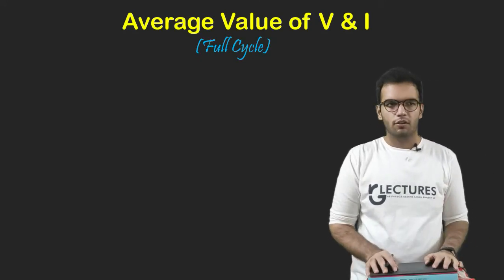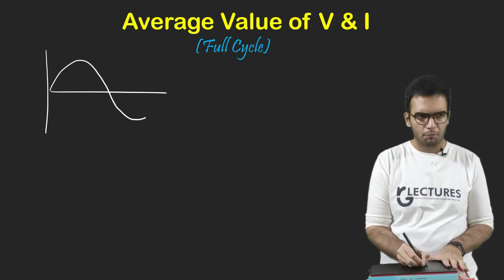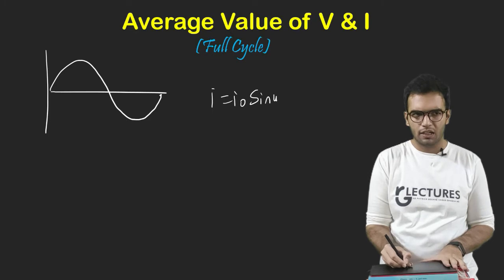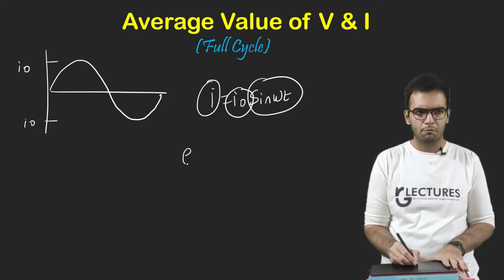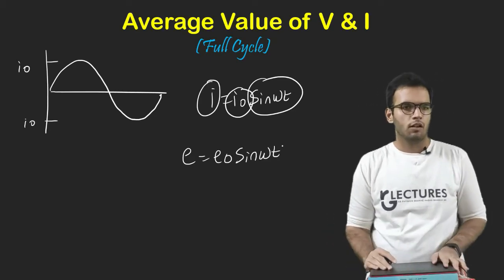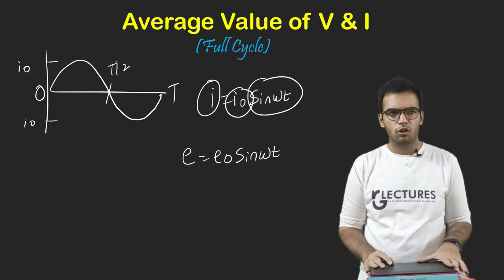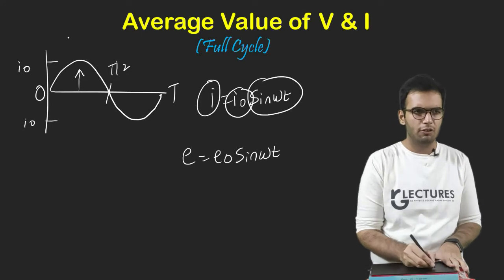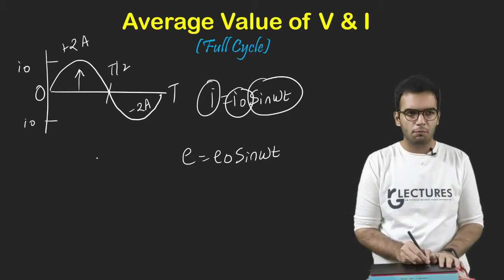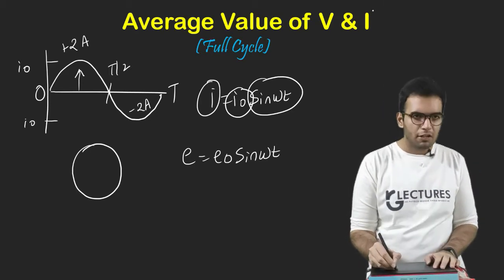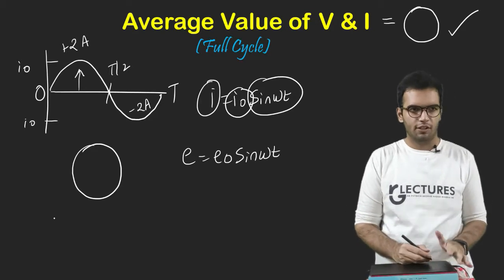Let's talk about the average value of voltage and current over a full cycle. Everything is represented by a sine wave because I = I₀ sin(ωt). So current is represented by a sine wave with amplitude I₀. This is my zero time period, this is my time period T — one cycle. In a half cycle, my current is in the upward direction, say +2 amps; in the next half cycle, it is in the negative direction, -2 amps. So the average simply will be zero. The average value of voltage or current in a full cycle is zero. The same applies to voltage also.